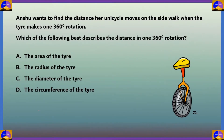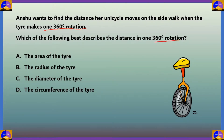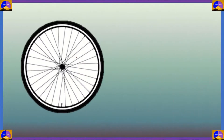Next question: Anchu wants to find the distance her unicycle moves on the sidewalk when the tire makes one 360-degree rotation. Which of the following best describes that distance? Option A: the area of the tire. Option B: the radius of the tire. Option C: the diameter of the tire. Option D: the circumference of the tire.